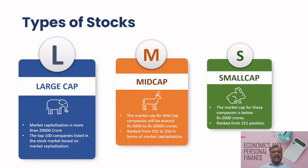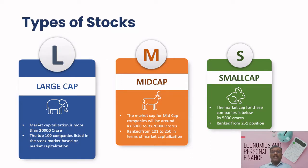The next category is mid cap stocks. Mid cap stocks represent companies which have a moderate market capitalization between 5,000 to 20,000 crore. They are generally considered to have more growth potential than large cap but may carry higher risk. Mid cap companies are still growing and expanding their operations, making them attractive to investors seeking a balance of growth and stability.